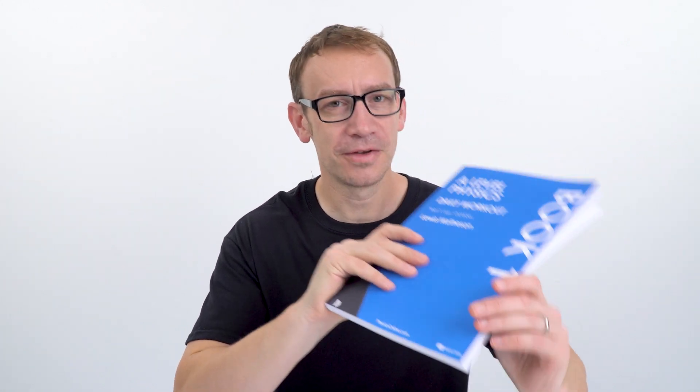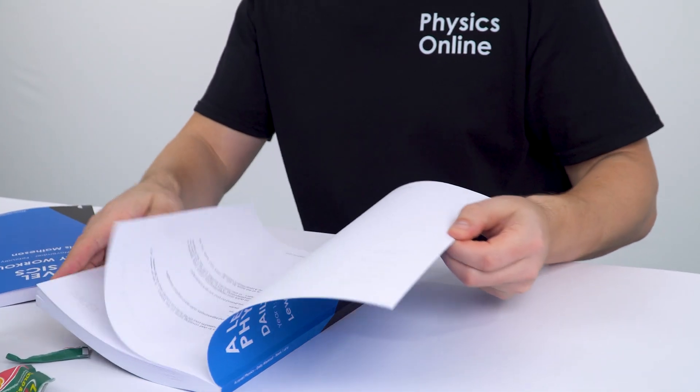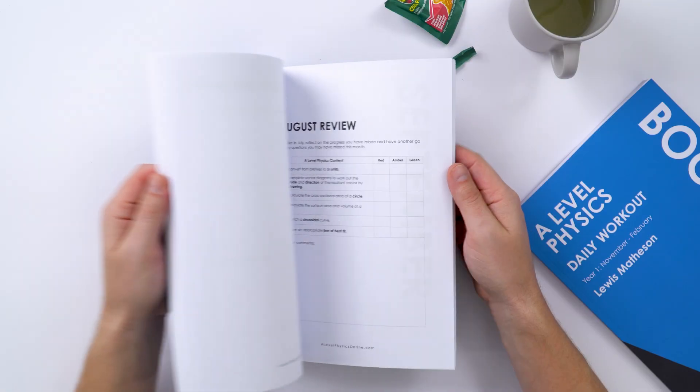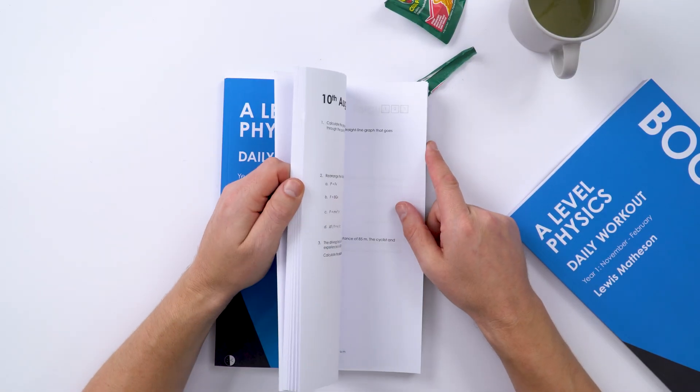So the first one is book one, and this has questions which are basically for every single day from July all the way to the end of October. Even if you haven't got the book at the moment or if you currently do have the book, you could still work through most of this book in a couple of days.